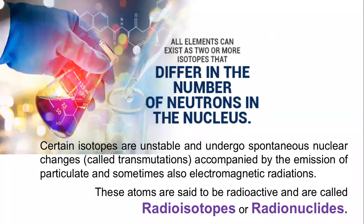Hello everyone. We will now discuss some of the major radioisotopes or radionuclides which are very frequently used for radiolabelling techniques in biology. We have been discussing about radiolabelling techniques — what exactly they are, how they work, and what are the major uses. Now we will get a closer look at some of the major radioisotopes that are extensively used in biological systems.